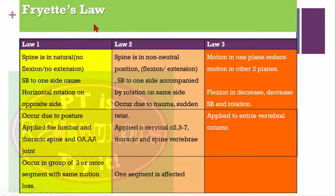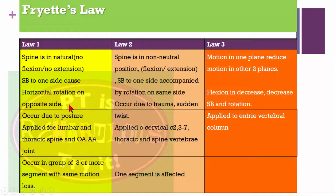Let's learn Fryette's laws. Fryette developed laws for assessing and mobilizing the spine. The first law states that when the spine is in a neutral position — not in flexion or extension — bending to one side causes horizontal rotation to the opposite side. This applies to the lumbar and thoracic spine, especially the occipitoatlantoaxial joint, and occurs in a group of three or more segments with the same motion loss.